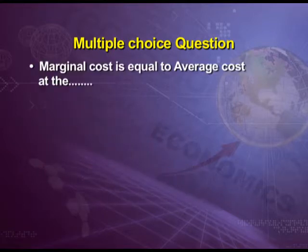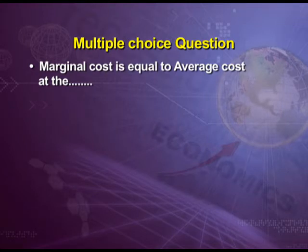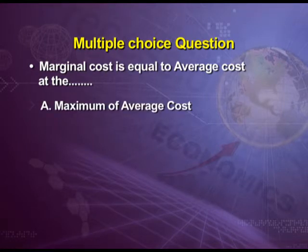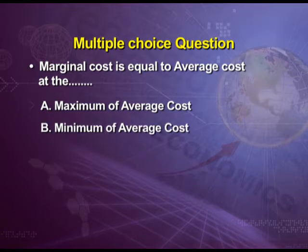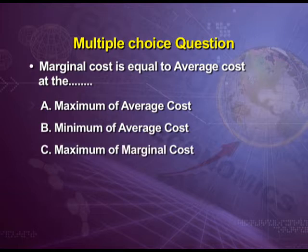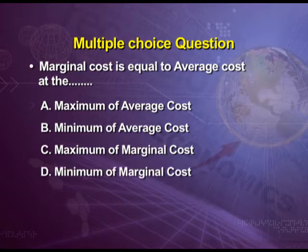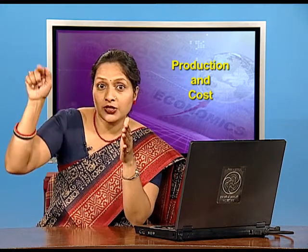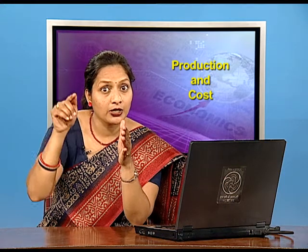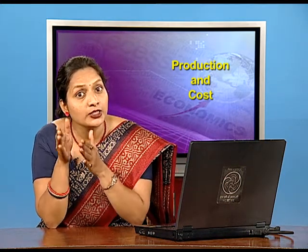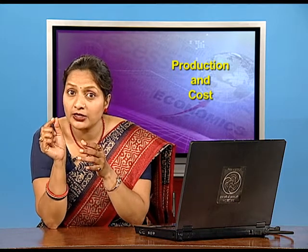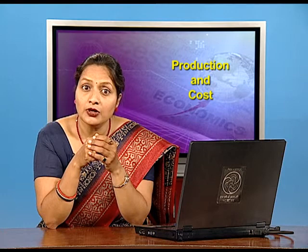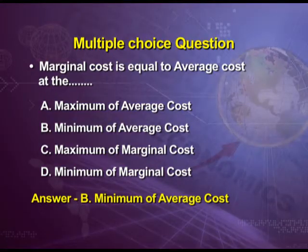Question three: marginal cost is equal to average cost at — option A maximum of average cost, option B minimum of average cost, option C maximum of marginal cost, option D minimum of marginal cost. Remember the diagram: the average cost curve is U-shaped and the marginal cost curve is also U-shaped. The marginal cost curve cuts the average cost at its minimum point. So the answer is option B — marginal cost equals average cost at the minimum of average cost.